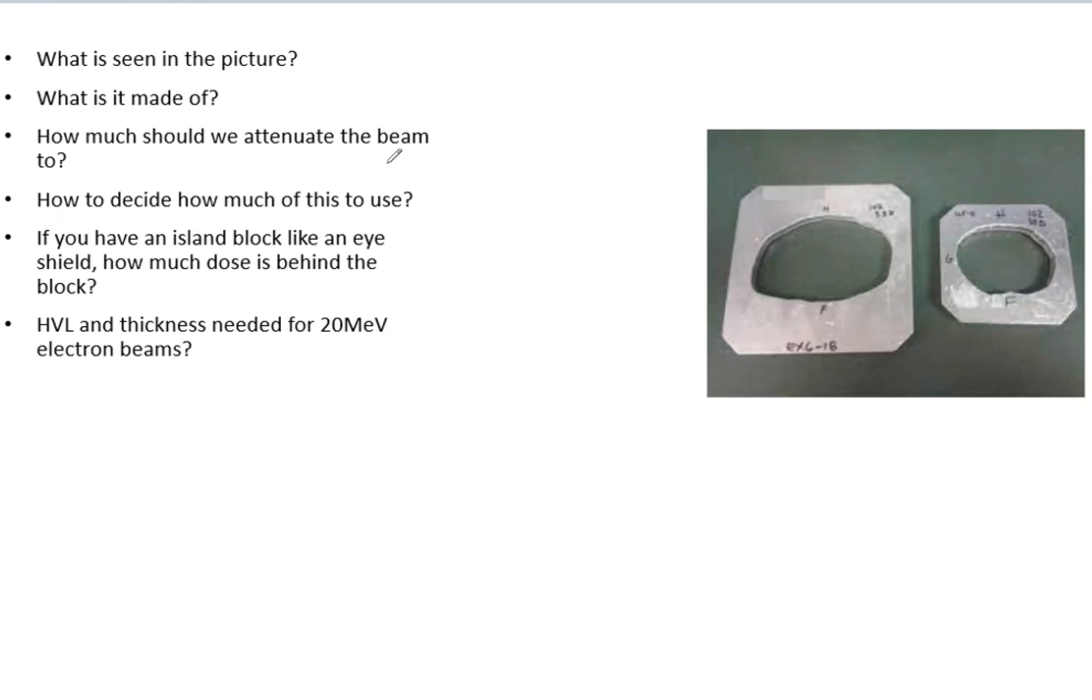So say you get this picture. What is seen in this picture? What is it made of? How much should we attenuate the beam to? How to decide how much of this to use? If you have an island block, like say an eye shield, how much dose is there behind the block? And then what is the HVL and thickness needed for a 20 MeV electron beam?